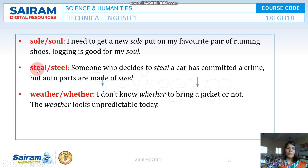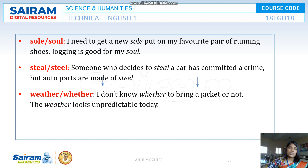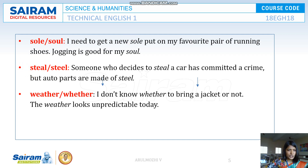STEAL and STEEL — STEAL means to take something unlawfully, which is not a good virtue. For example, someone who decides to steal a car has committed a crime. STEEL is a type of metal — for example, auto parts are made of steel.